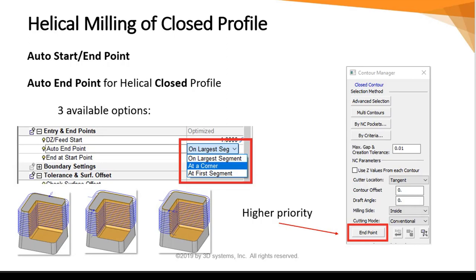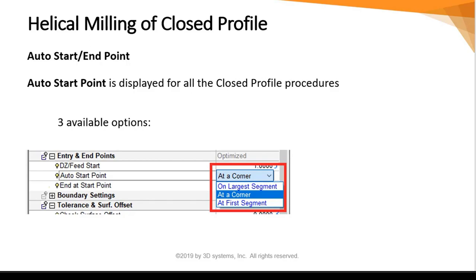A new auto endpoint feature has three available options: on the largest segment, at the corner, or at the selected segment. Note that the endpoint button is higher priority and will override any selection. The auto endpoint is available only for helical closed profile. The auto start point is displayed for all closed profile procedures and has the same three options.